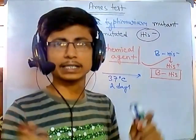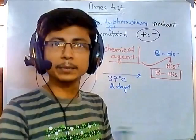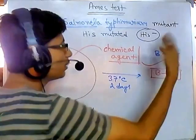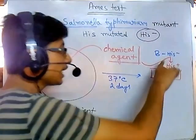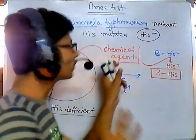So if we add the chemical agent and bacterial growth appears on the plate, we can say the chemical agent is mutagenic. Without the chemical agent, the bacteria won't grow. I should clarify: the Ames test is primarily to find mutagenic agents — most mutations are related to cancer, which is why the term carcinogenic is often used, but the test specifically detects mutagenicity.